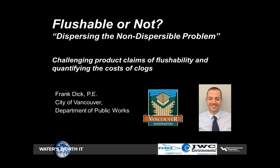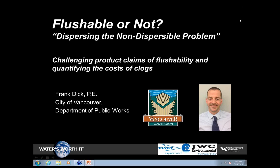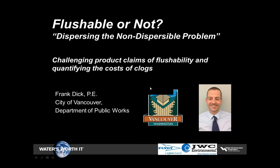Frank Dick is a wastewater engineer and industrial pretreatment coordinator for the city of Vancouver in the state of Washington. He manages the city's delegate pretreatment program, which includes 18 significant industrials, and is charged with capital improvement projects and energy efficiency efforts for the city's wastewater treatment facilities. Prior to his six years in wastewater engineering, Frank spent 20 years in environmental and facilities engineering at semiconductor facilities in the Portland-Vancouver area. Frank has a BS in chemical engineering from Washington State University and is a licensed PE in Washington and Oregon. I now introduce Frank.